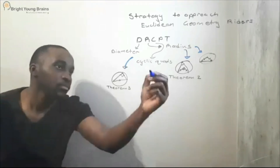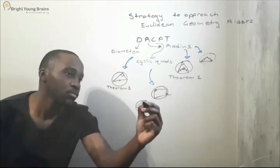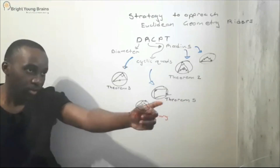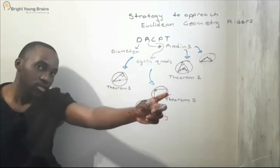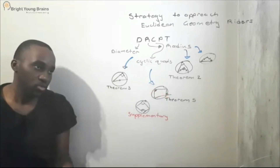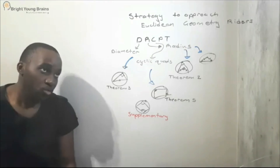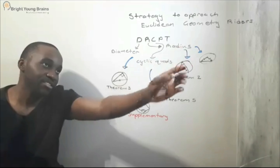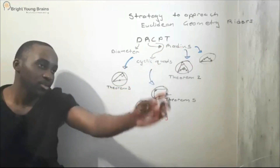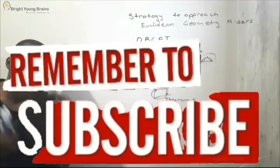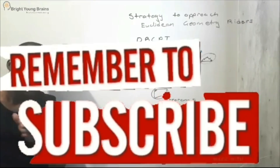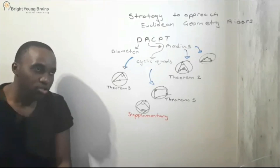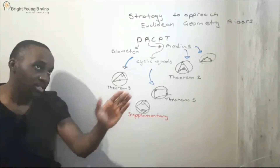C stands for cyclic quads. With cyclic quadrilaterals, we know that opposite angles will be supplementary, and we also know that an exterior angle of a cyclic quadrilateral is equal to the opposite interior angle. When you think of D for diameter, R for radius, and C for cyclic quads, your brain is already working to feed information so you can answer your Euclidean geometry question.